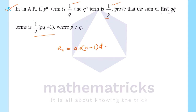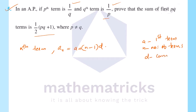This means the pth term, a_p, depends on the first term a and common difference d. Here d is the common difference of the arithmetic progression.